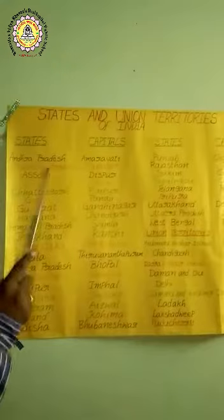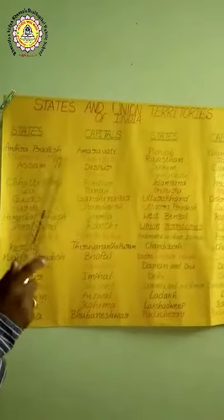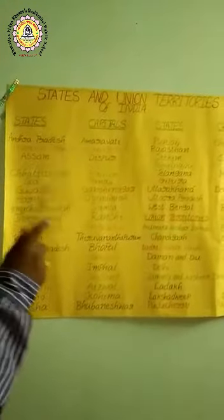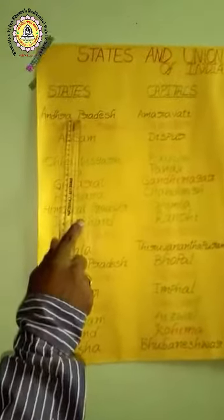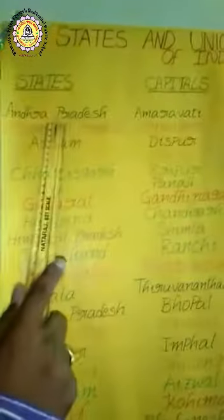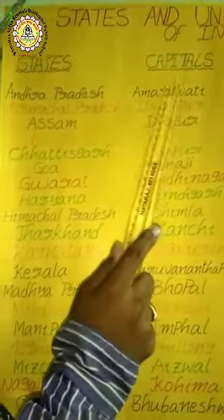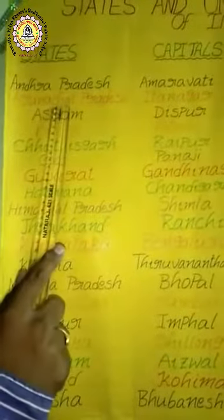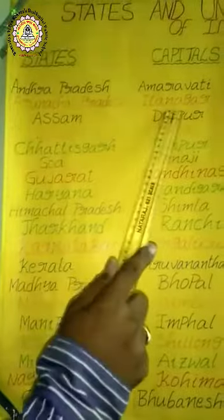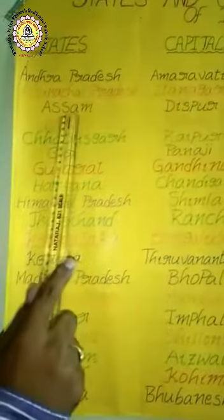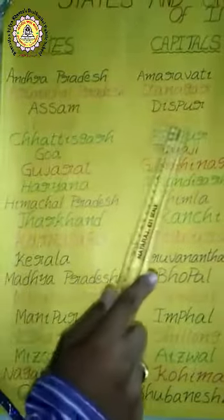How many states, children? 28 states and 9 union territories. Here, see the 28 states and their capitals. One by one I will tell you; try to remember. The first one is our state — Andhra Pradesh. In which state are we all living? Andhra Pradesh. The capital of Andhra Pradesh is Amaravati. Second: Arunachal Pradesh, capital Itanagar. Assam, Dispur. Bihar, Patna.